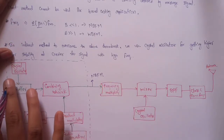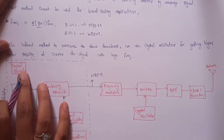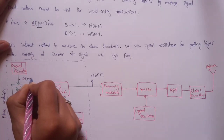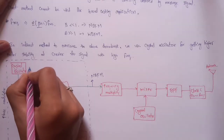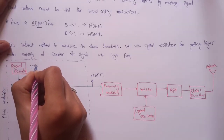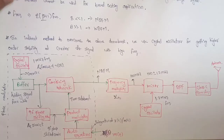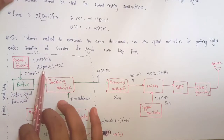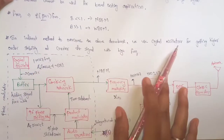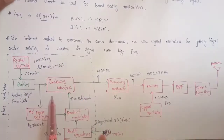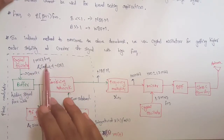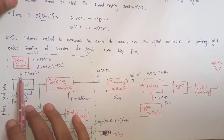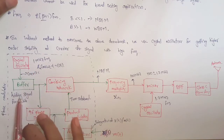Here we get the narrow band frequency. The crystal oscillator generates the carrier signal with a frequency of 1 MHz. The crystal oscillator helps us achieve higher-order stability of the carrier signal with high frequency. 1 MHz is quite a high frequency. This carrier frequency is sent to a buffer which holds the signal for a while.